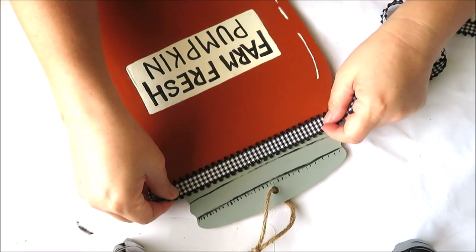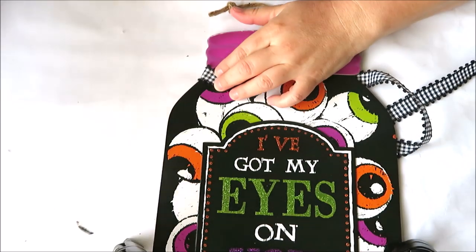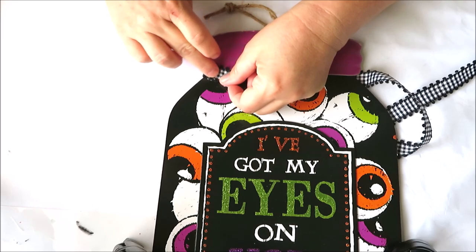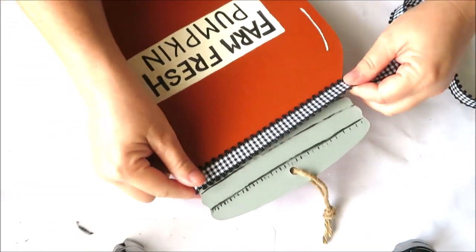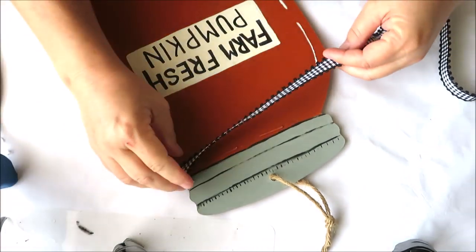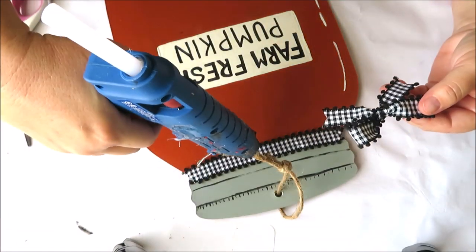And now for some embellishment, I decided to add a little bit of black and white gingham ribbon around the top of our lid, just hot gluing it into place in both the front and back and adding a little bow right in the center.